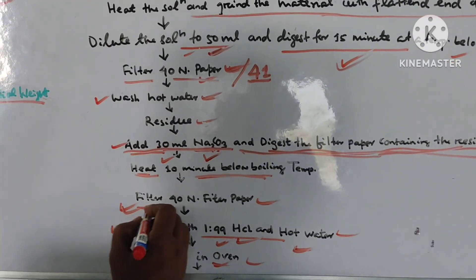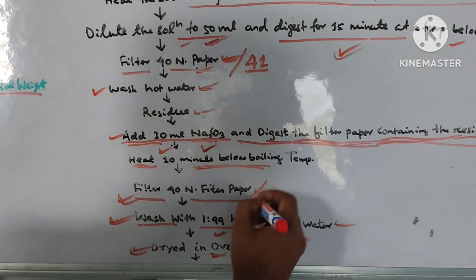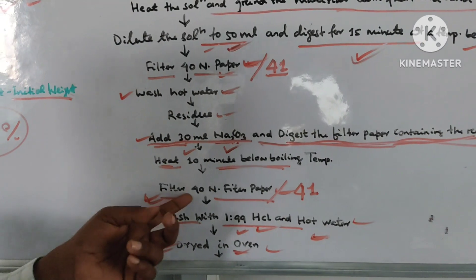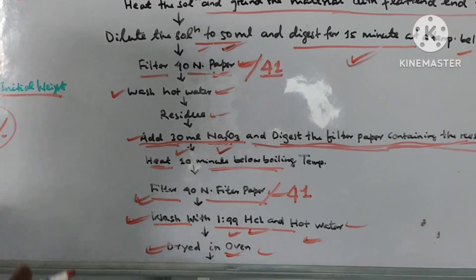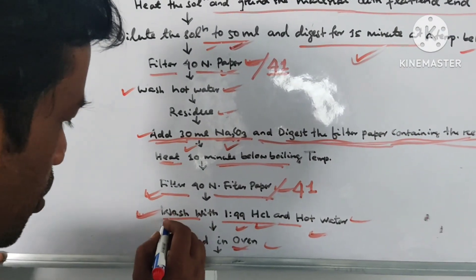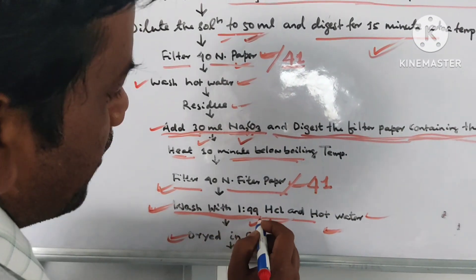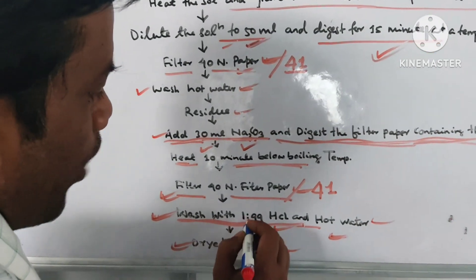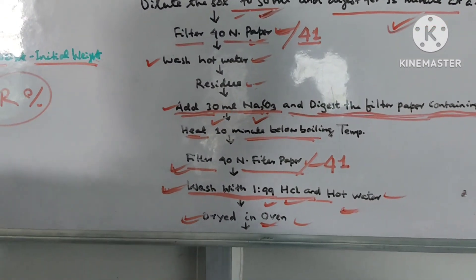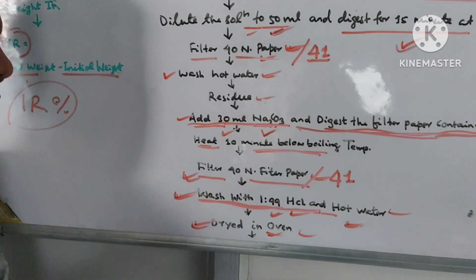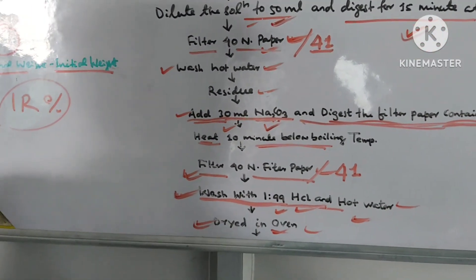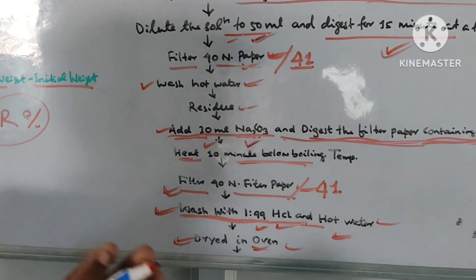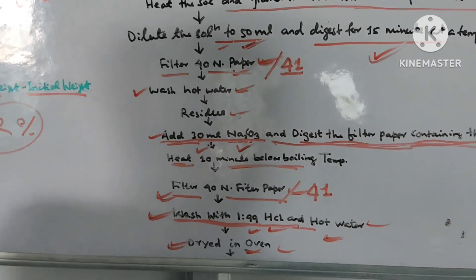Then filter again with No. 14 filter paper. If No. 40 filter paper is not available, you can use No. 41 filter paper. A very important thing: the filter paper should be acid-free. So wash with 1:99 HCl - hydrochloric acid - for acid-free purpose, and then wash properly with hot water. Proper washing gives accurate results.